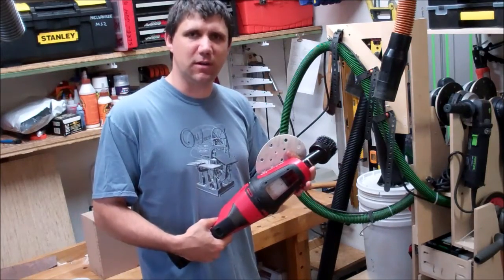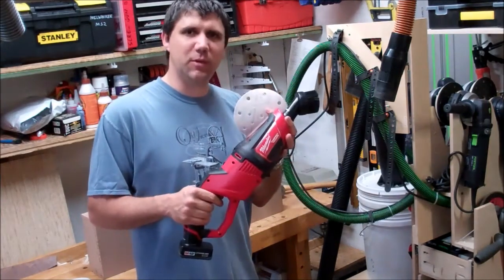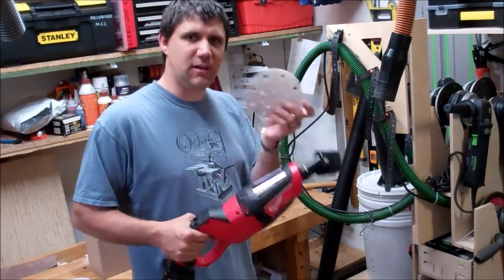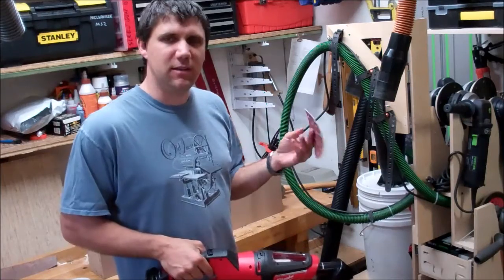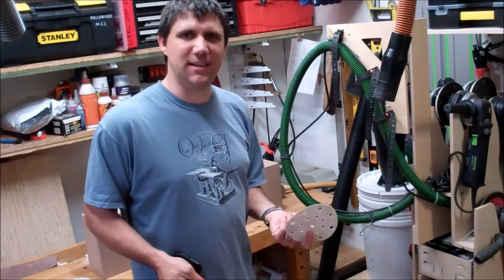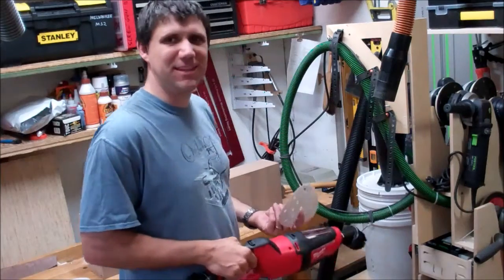Man, I wish I'd thought of this before. This little Milwaukee vacuum is all you need for cleaning the back of your paper and the face of your platen between sanding grits. Well, that solves my sanding problem. Let's go make some wood smooth.